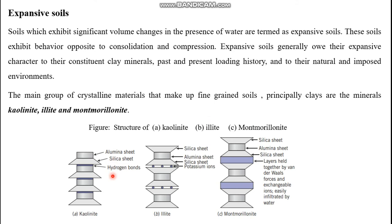In kaolinite, an alumina and silica sheet are bonded with another alumina and silica sheet using a strong hydrogen bond. In illite, an alumina sheet is held by two silica sheets, and such minerals are connected or bonded with another molecule using potassium ions. In montmorillonite, they have the same structure as illite but are held by a weak van der Waals force, making montmorillonite responsible for expansive soils.